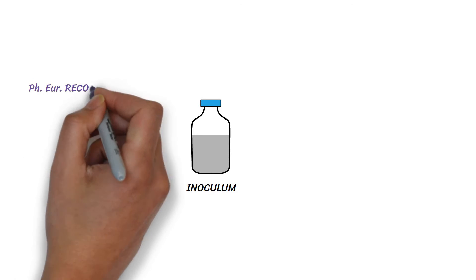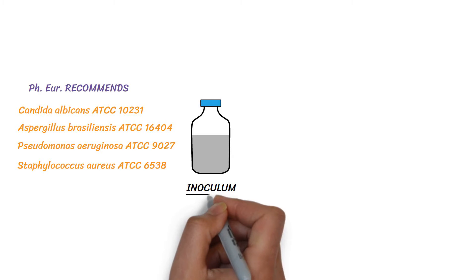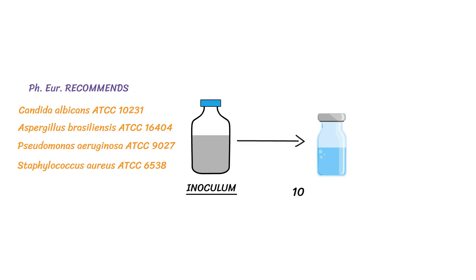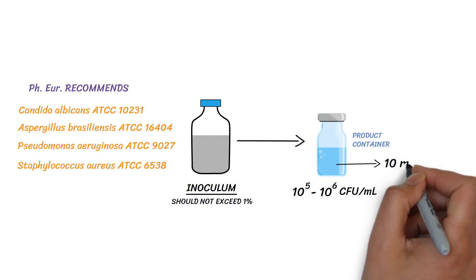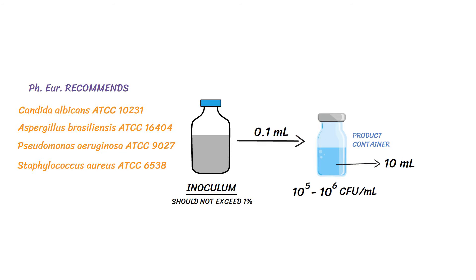The European Pharmacopoeia recommends using specific microorganisms. Prepare a suspension of these microorganisms which will give 10 to the power of 5 to 10 to the power of 6 microorganisms per milliliter when inoculated in the product container. The volume of inoculum should not exceed 1% of the volume of the product — for example, if the product volume is 10 milliliters, the inoculum volume should be 0.1 milliliters. If possible, use the original product containers and a separate container for each microorganism.